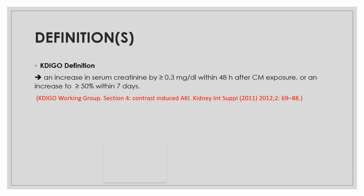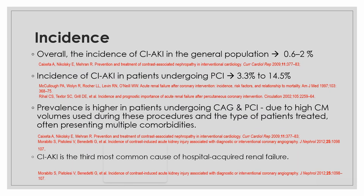The incidence of contrast-induced acute kidney injury in the general population is 0.6 to 2%. In patients undergoing percutaneous interventions, it is 3.3 to 14.5%. The prevalence is higher in patients undergoing coronary angiography and PCI due to higher contrast volumes used and the types of patients treated, who usually have multiple comorbidities.